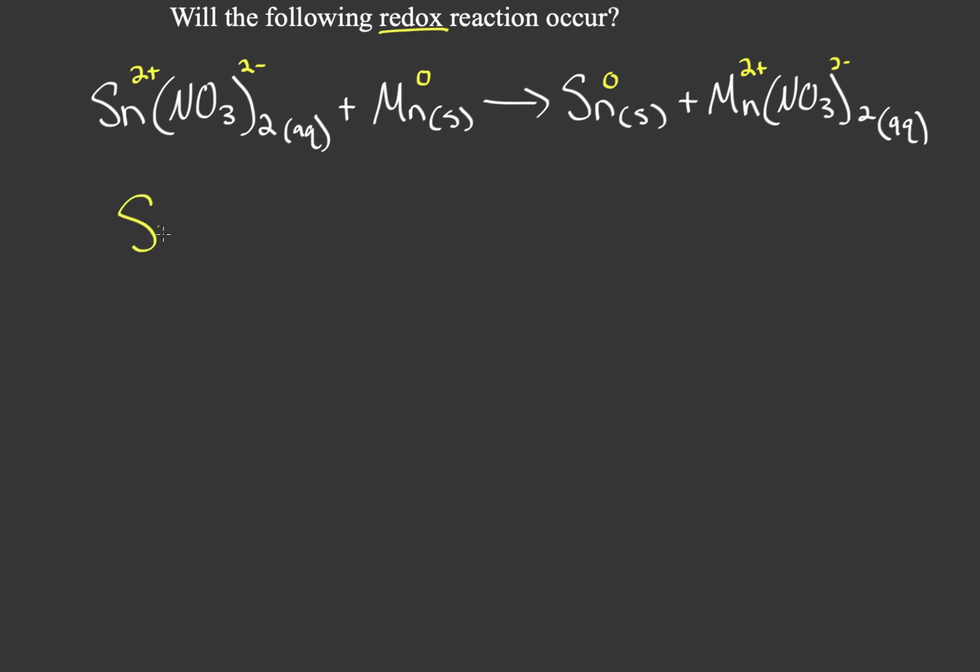So if we write this, we have tin in its two plus form and it's aqueous, and then we have manganese in its solid form and I'm going to write zero here to show its oxidation number. You have tin here now in its solid state with a zero oxidation number, and manganese in its aqueous state with a two plus charge.